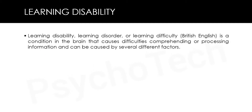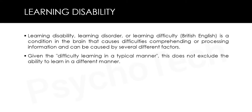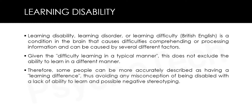The next type is learning disability — also called learning disorder or learning difficulty — a condition in the brain that causes difficulties comprehending or processing information, which can be caused by several different factors. Given the difficulty in learning in a typical manner, this does not exclude the ability to learn differently. Some people are therefore more accurately described as having a learning difference, avoiding misconceptions of disability and negative stereotyping.